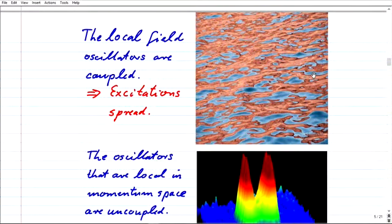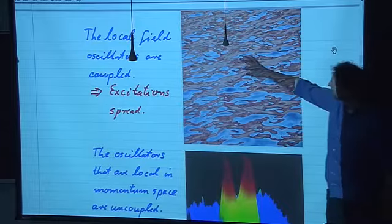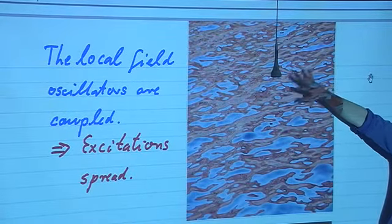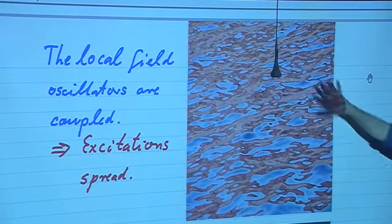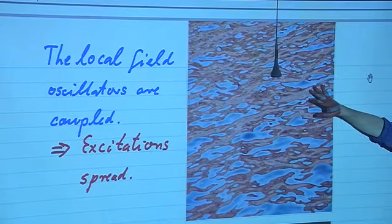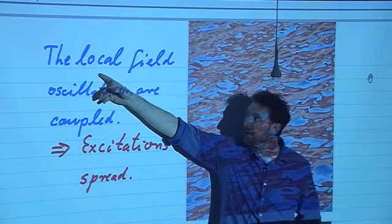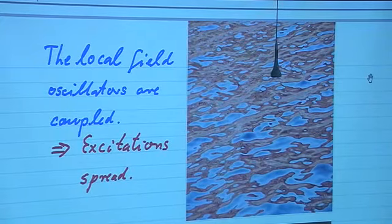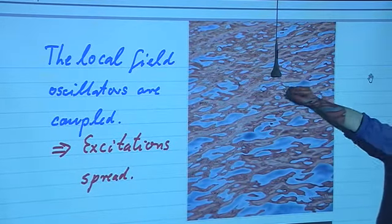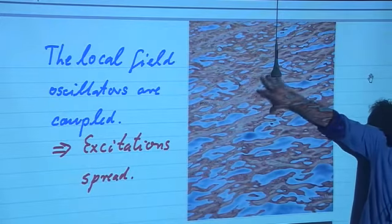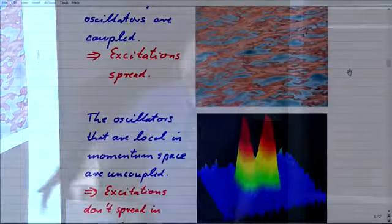The intuition is this: we originally looked at the case of water waves on a lake, with a cork floating somewhere bobbing up and down as the oscillator, with one such oscillator at every point in space. Those oscillators were coupled, achieved by the Laplacian. So those local field oscillators — local in space — are coupled to each other, meaning excitations spread. If you create waves at some point and excite that oscillator, it will excite neighboring oscillators, giving a spreading excitation.